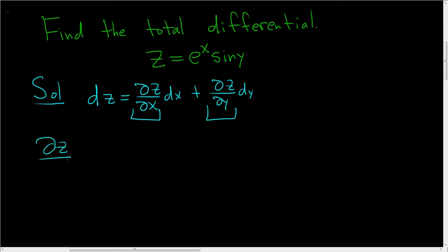So ∂z/∂x, we're taking the partial derivative of z with respect to x, treating y as a constant. The derivative of e to the x is e to the x, so no problem there.